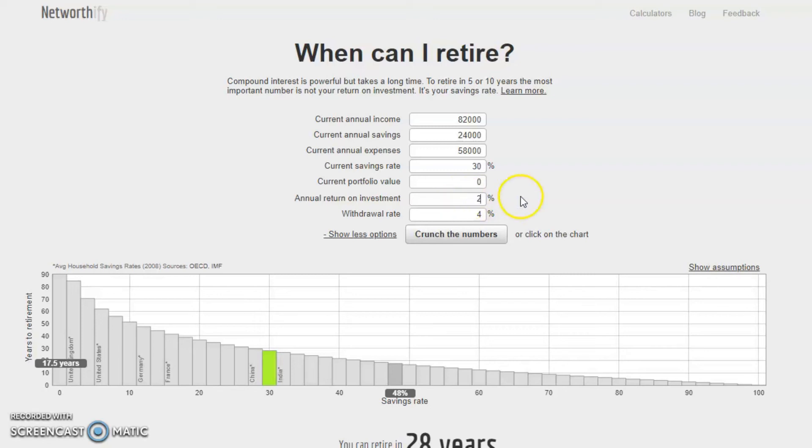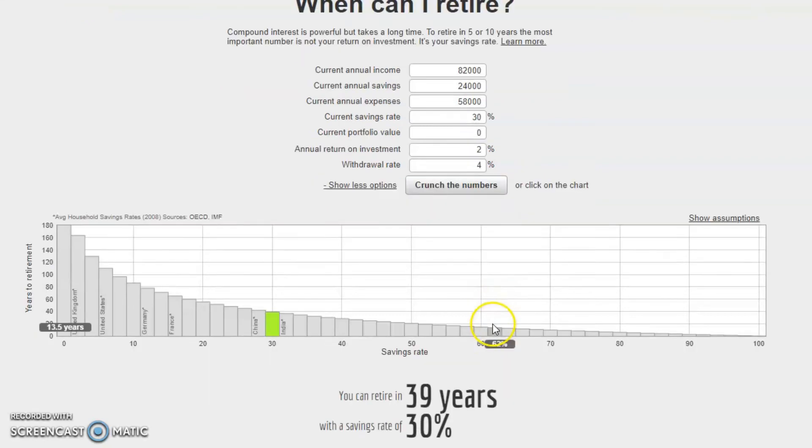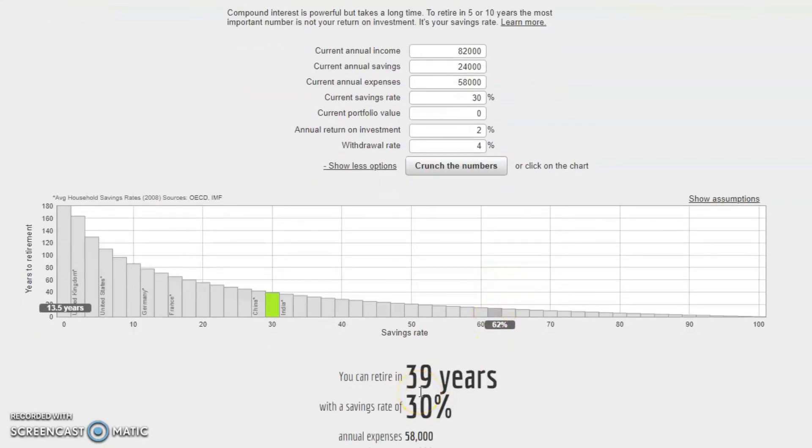With a 2% return after inflation, the estimate at the bottom increases as expected. And what about the withdrawal rate? 4% may be safe for some traditional retirees, but let's say this couple aims to retire early, so they want a more conservative withdrawal rate.